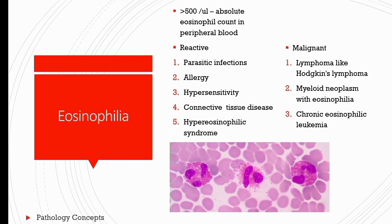Eosinophilia: when absolute eosinophil count in peripheral blood is more than 500 per microliter, it is called eosinophilia. Eosinophilia is categorized into three categories: mild, moderate, and severe. Mild eosinophilia is 500 to 1,500 per microliter; moderate eosinophilia is 1,500 to 5,000 per microliter; and severe eosinophilia is more than 5,000 per microliter.